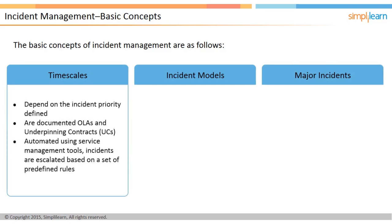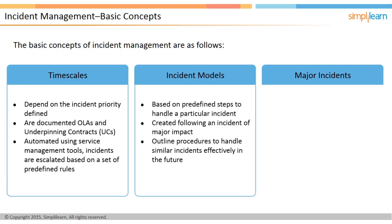The objective of incident management is to restore services as soon as possible. It is important to decide the timescales for incident resolution. The business defines the timescales while setting up a service. To commit to such timescales, the service provider and the customer must agree and document it in the service-level agreements. Timescales depend on the defined incident priority and are documented in the operational-level agreements and underpinning contracts, or UCs. Service management tools are used to automate timescales and escalate the incident as required based on a set of predefined rules. When an incident occurs for the first time and has a major impact, a procedure is set up so that any future recurrence can be handled effectively. This procedure is called an incident model.